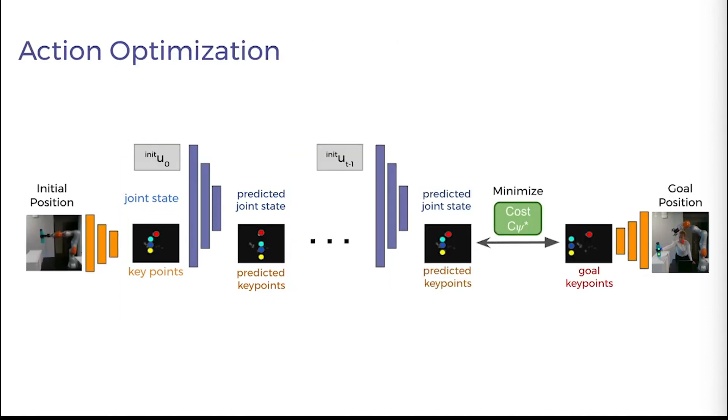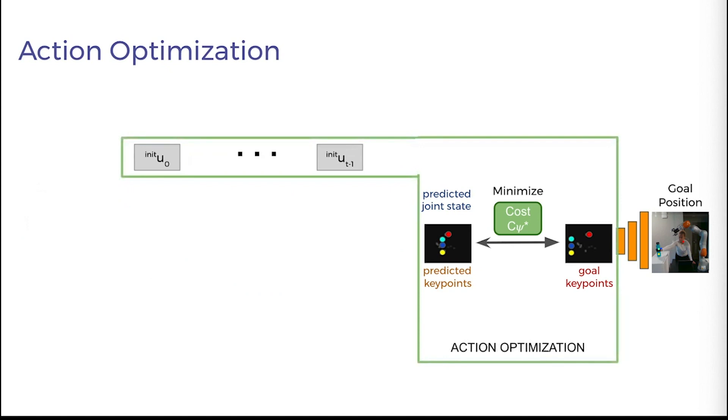Once the trajectory of keypoints and joint configurations has been predicted from the initial state, it is compared to the goal keypoints using the learned cost function. Minimizing this cost function with respect to the actions via gradient descent gives the optimal set of actions that moves the object to its goal position.